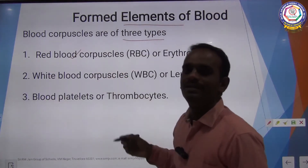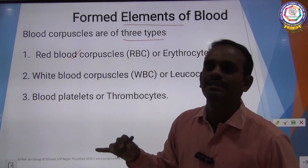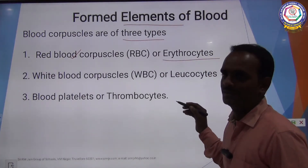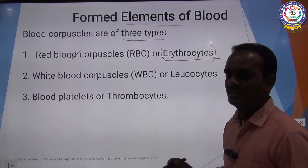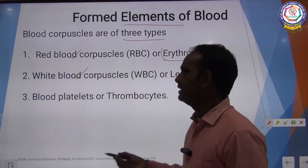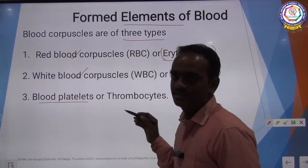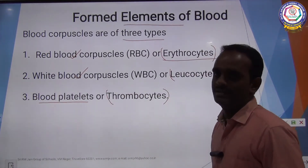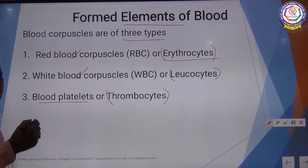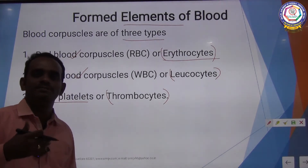The first one is RBC — Red Blood Corpuscles. The other name for RBC is erythrocytes. The second one is WBC or White Blood Corpuscles; the other name is leukocytes. The third one is blood platelets; the other name is thrombocytes.